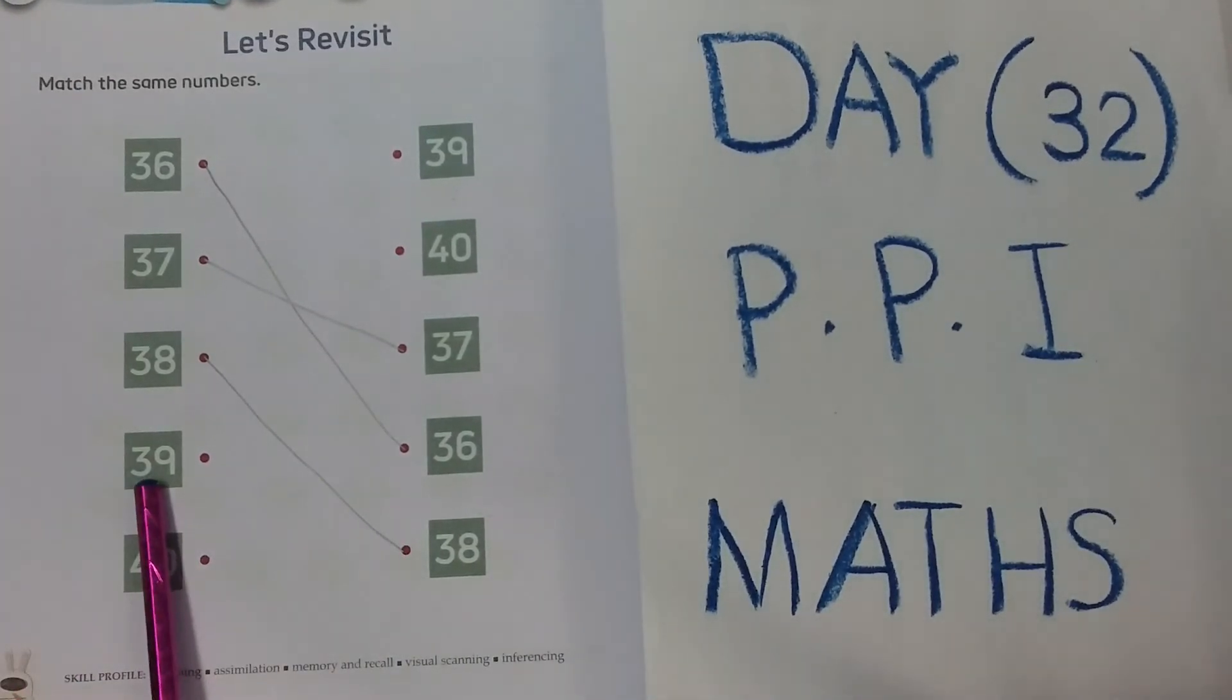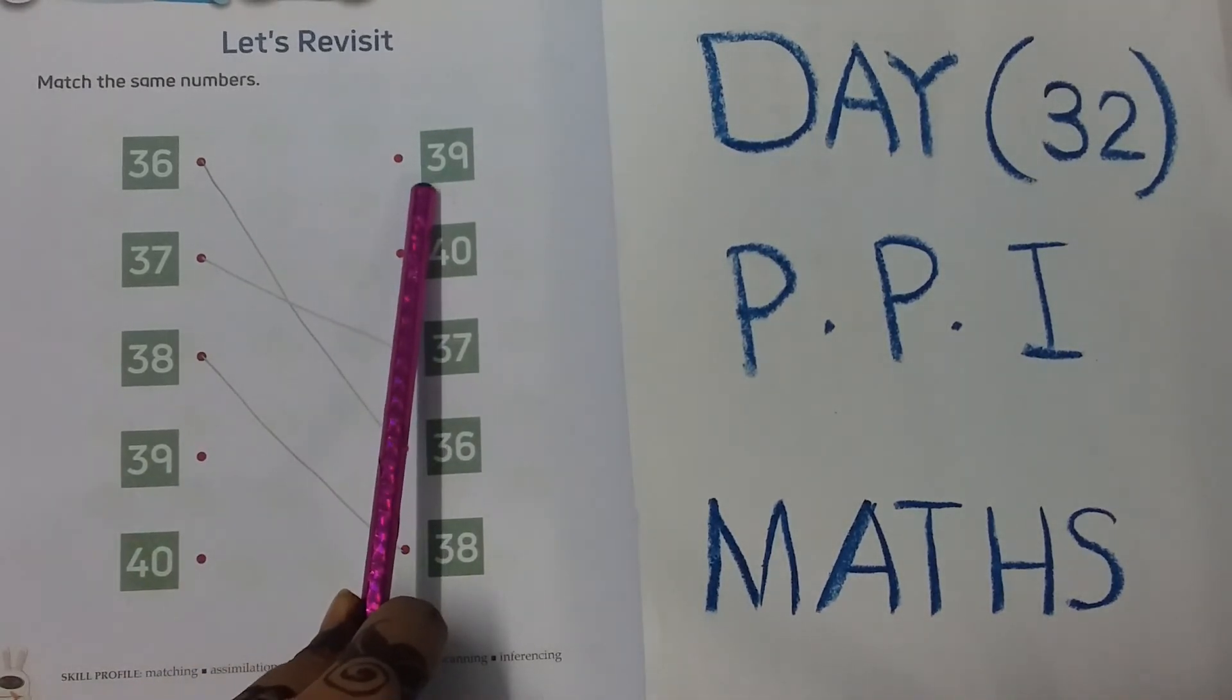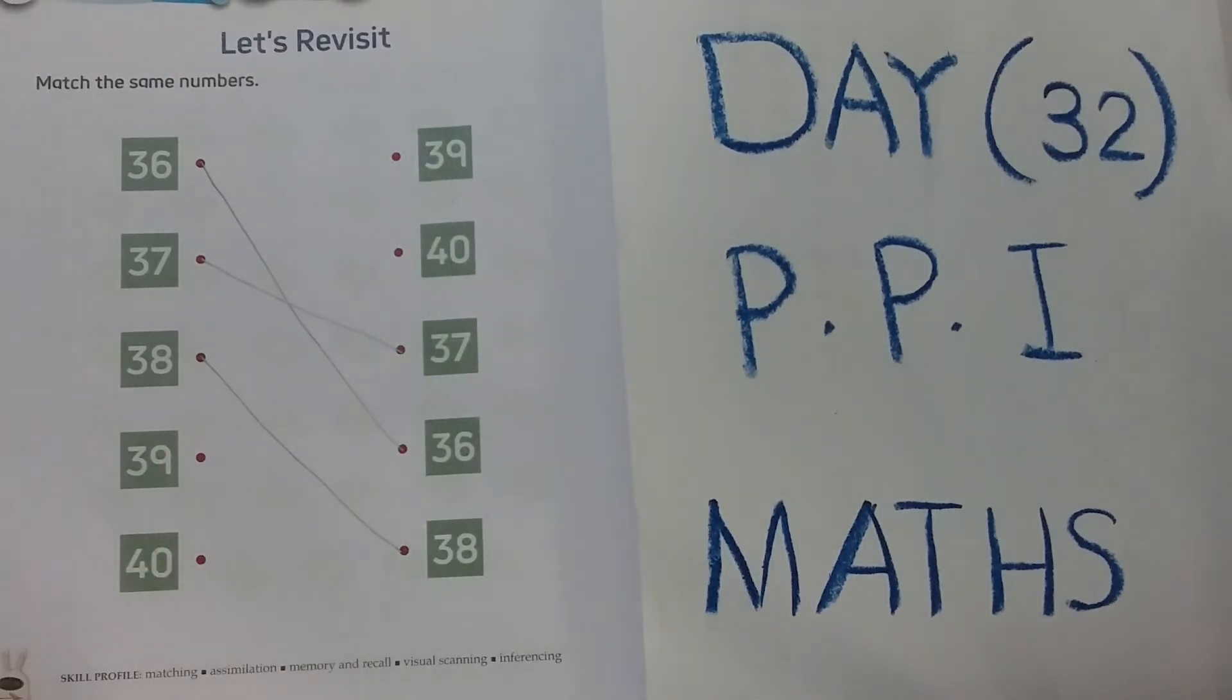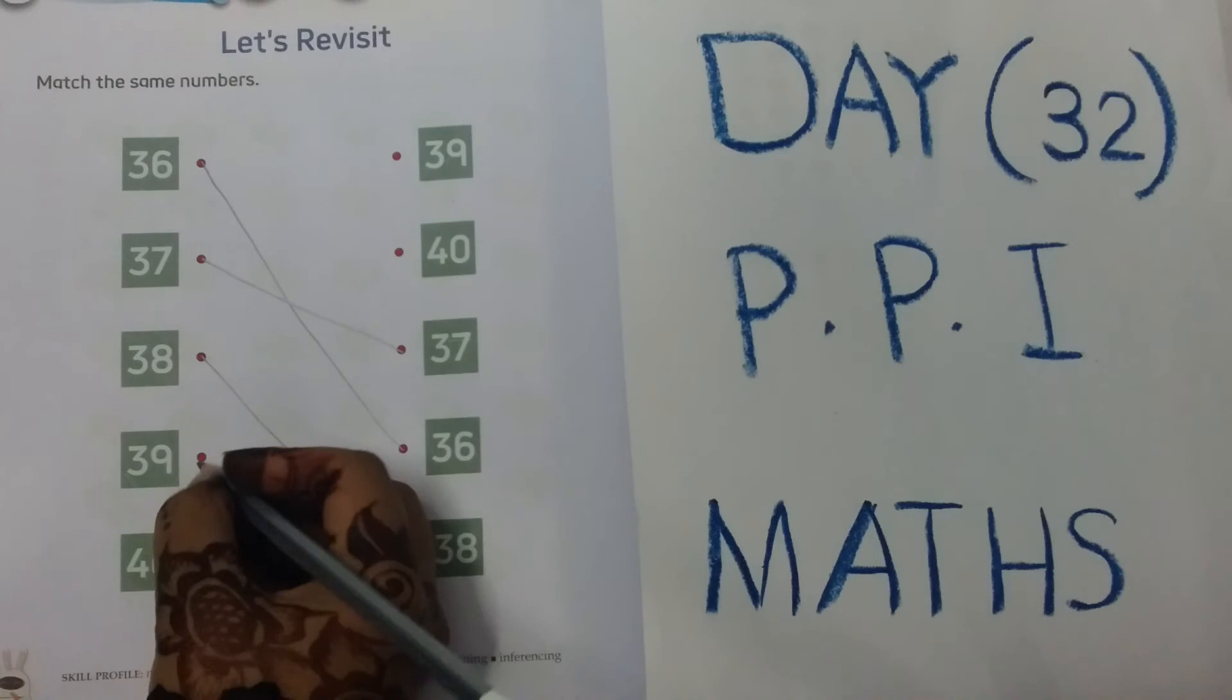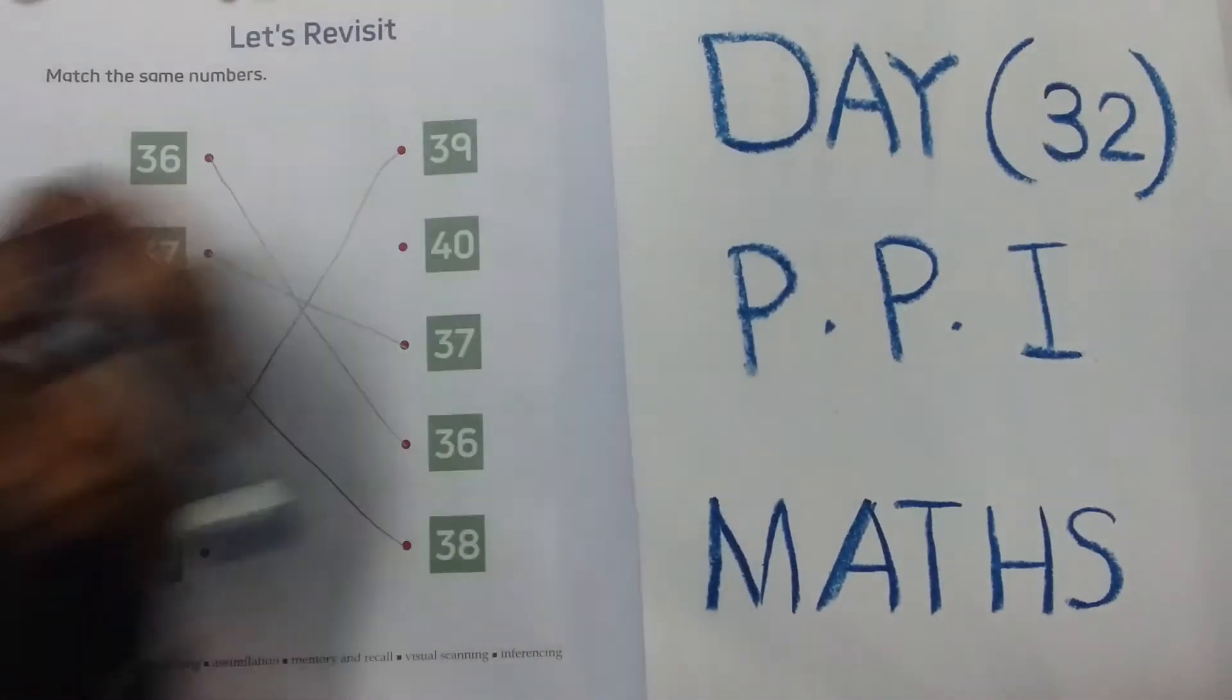39. 3, 9, 39. Where is another 39? Yeah, this is. So we have to find out the same number and we have to match. 39 with 39. 39 after?